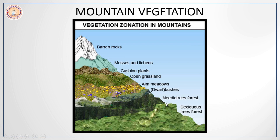With increasing altitude, the temperature falls and coniferous trees — that is needle-leaf trees such as pines and firs — become very common. As one goes higher up, bushes and shrubs become common because of less rainfall. Further higher in the region, this area turns into meadows or grasslands. Still higher, we have poorer qualities of vegetation consisting of mosses and lichens. Beyond the snow line there is no vegetation at all — only barren rocks.